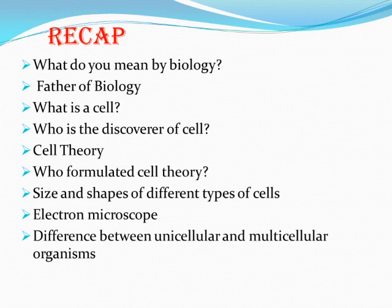We also discussed the size and shapes of different types of cells. Cells are measured in a unit called microns or micrometers. One micron or micrometer is equal to 0.001 millimeter.